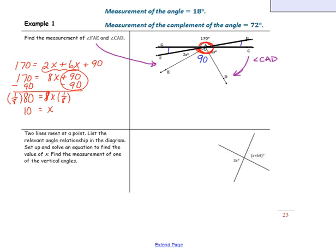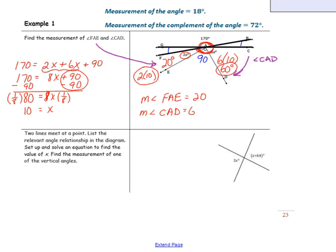Now that we know the value of x, we can substitute 10 into the terms. 2x gives us 2 times 10, which is 20 degrees, and 6 times 10 gives us 60 degrees. So we have solved for both measures: the measure of angle FAE is equal to 20 degrees, and the measure of angle CAD is equal to 60 degrees.